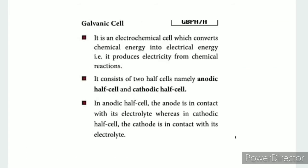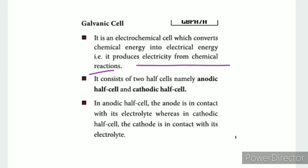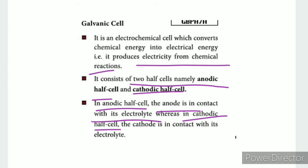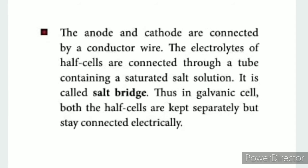The first is the galvanic cell. This is an electrochemical cell which converts chemical energy into electrical energy to produce electricity from a chemical reaction. It has an anodic cell and a cathodic cell. The anodic cell contains the anode and an electrolyte, and the cathodic cell contains the same electrolyte.